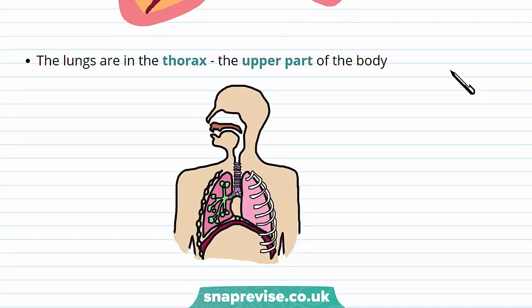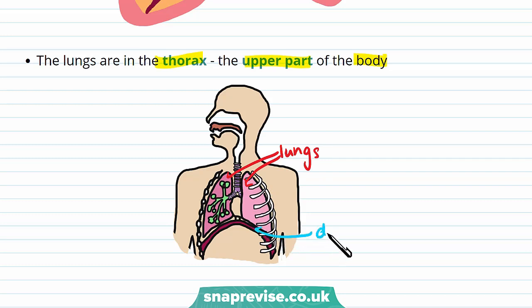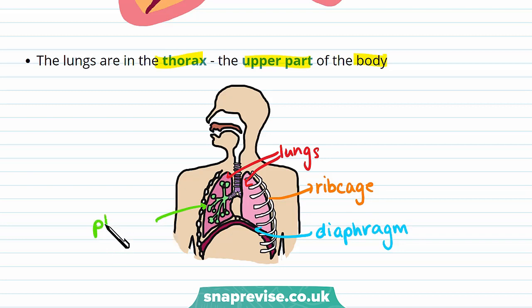But where are the lungs? The lungs are in the thorax, which is the upper part of the body. Now we're going to label the main structures of the thorax. These are the lungs, and this is the diaphragm — the diaphragm is a muscle that separates the thorax from the abdomen. The lungs are protected by bones that make up the rib cage, surrounded by a pleural membrane, and the intercostal muscles lie between the rib cage.